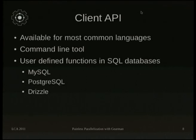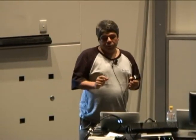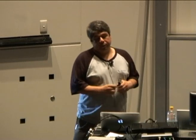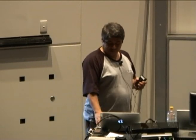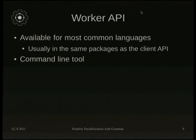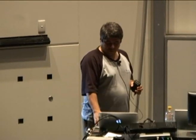The client API is available for almost any language — you name it, there's probably a GearMan client for it. There are also command line tools, so you can use Bash to submit jobs and process jobs from it. If you can read pipes, you can do it. There are also UDFs for MySQL, Postgres, and Drizzle, so you can submit jobs from inside triggers and stored procedures. There's a subtle difference between a client and a worker: a client submits jobs, a worker processes jobs, and anything that functions as a client will more than likely function as a worker, including the command line tools.